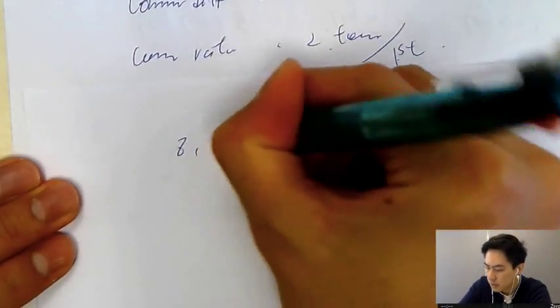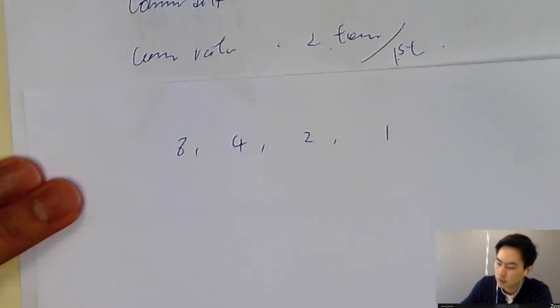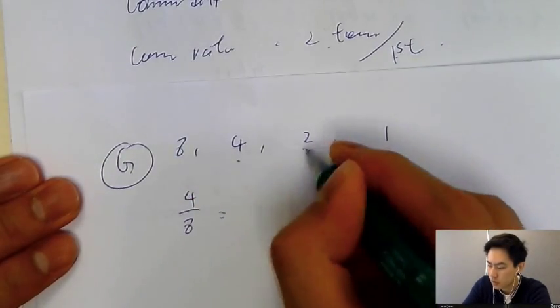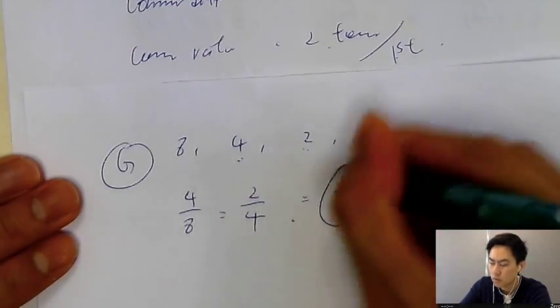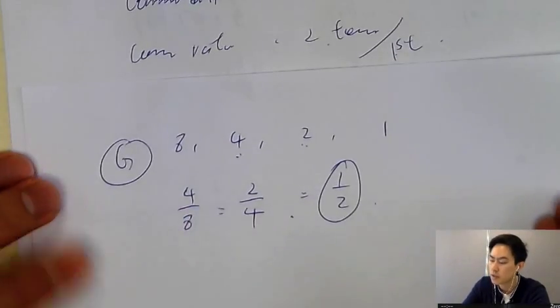Let's say eight, four, two, one, and so on. Obviously, this is a geometric sequence because the second term four over eight must equal the third term over the second term, and that is all equal to one over two. This is a geometric sequence.